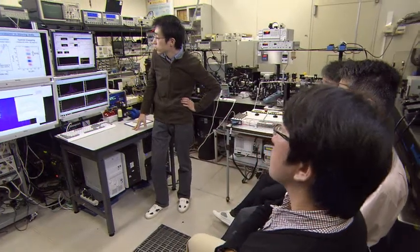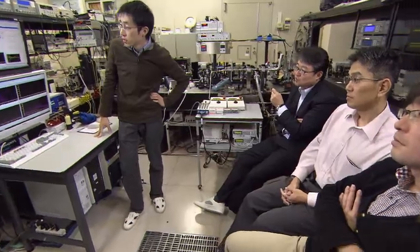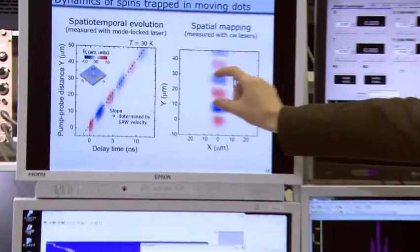When we measured the direction of the electron spins, however, we found something very interesting. During this movement, the electron spins were not always facing in the same direction. The direction had changed over time.